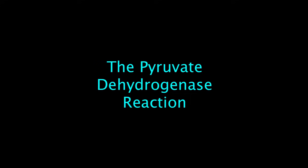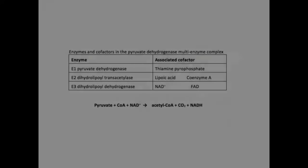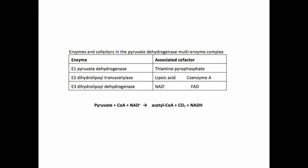Now that we have pyruvate in the mitochondrial matrix, we can see how it's converted to acetyl-CoA by the pyruvate dehydrogenase reaction. The PDH reaction is the first committed step in aerobic metabolism and serves as a gateway for all carbohydrates entering aerobic metabolism. It's carried out by a multi-enzyme complex composed of three different enzymes and involves five coenzymes. The enzymes are pyruvate dehydrogenase, dihydrolipoyl transacetylase, and dihydrolipoyl dehydrogenase. The five coenzymes are coenzyme A, NAD, FAD, thiamine pyrophosphate, and lipoic acid.